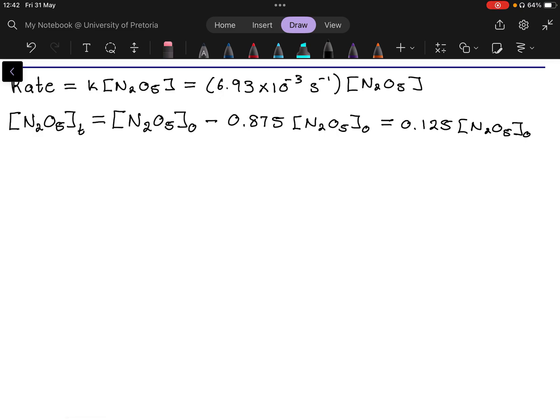So we know it's first order. That means we can use the integrated rate law of a first order reaction, which is ln concentration at time T of N₂O₅ divided by initial concentration of N₂O₅ is equal to minus KT.